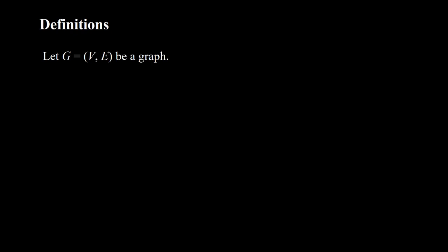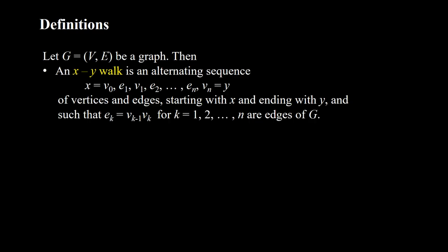For now we are just going to focus on undirected graphs. Definitions. Let G, which equals to the pair of V and E, be a graph. Then an X-Y walk is an alternating sequence X equals V0, E1, V1, E2, ..., En, Vn which equals Y, of vertices and edges starting with X and ending with Y, such that Ek equals V(k-1)Vk, for k equals 1, 2, and so on — and these are edges of G.